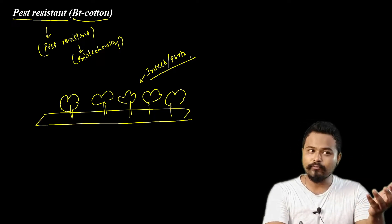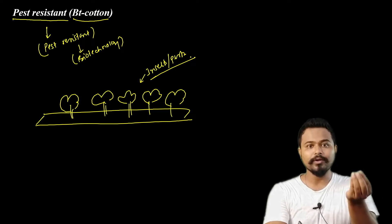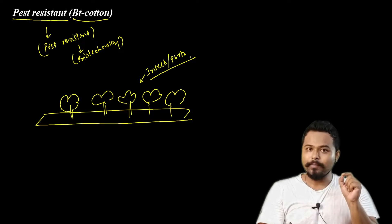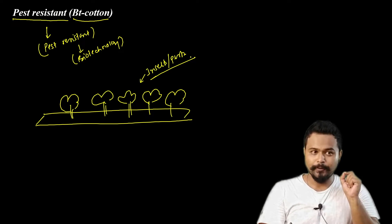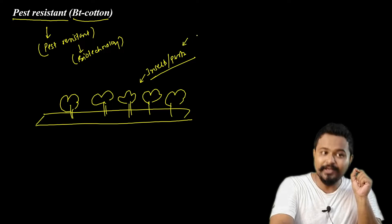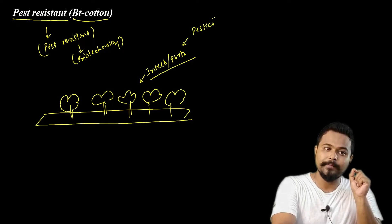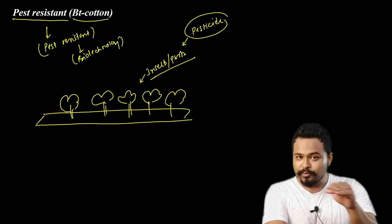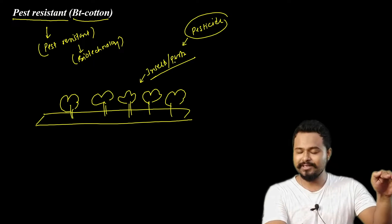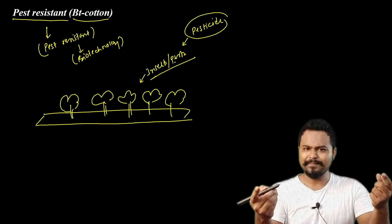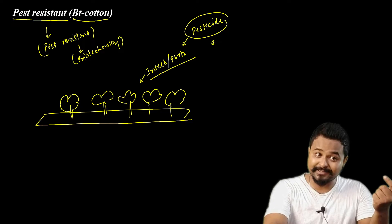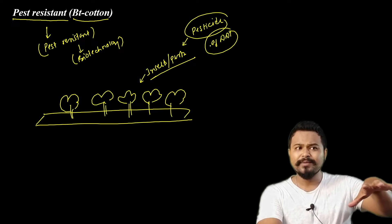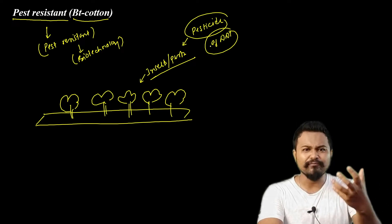If pests eat the cotton farm, the cotton plant will be damaged. If you use a chemical pesticide — pesticide means chemicals used to kill pests — these are examples of harmful chemicals used against pests.